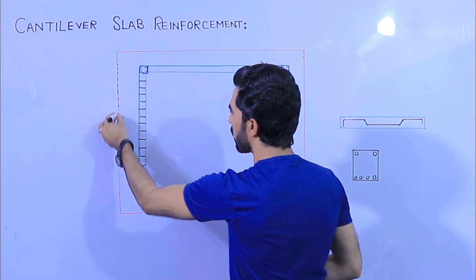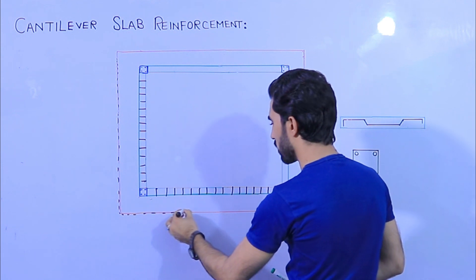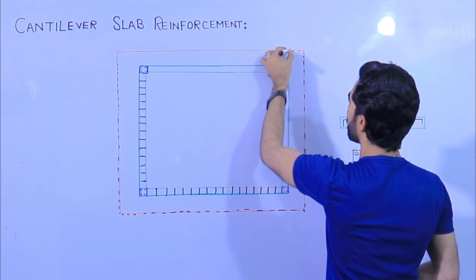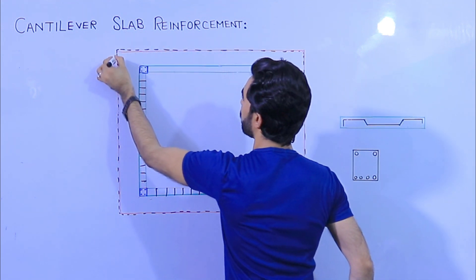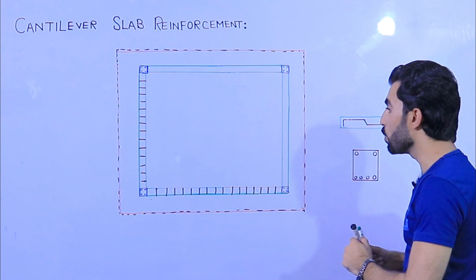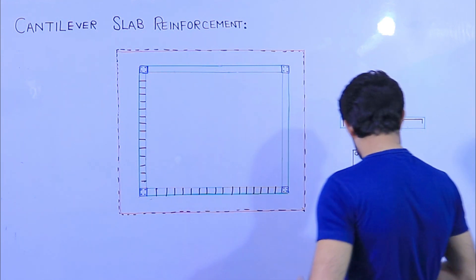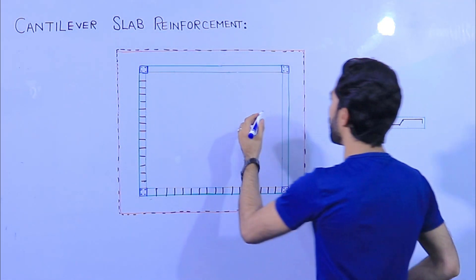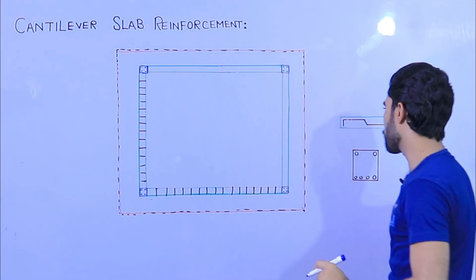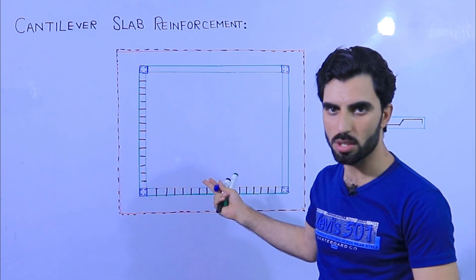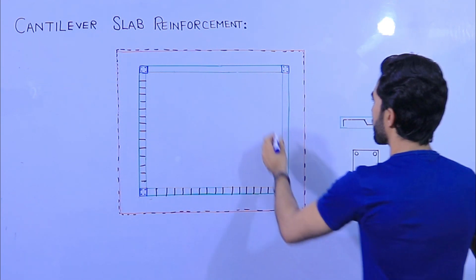The slab is this cantilever slab — about four feet, or four-and-a-half feet, or one meter to one-and-a-half meters. Now, in the slab we have main bars and distribution bars. The bar should be bent near the support.